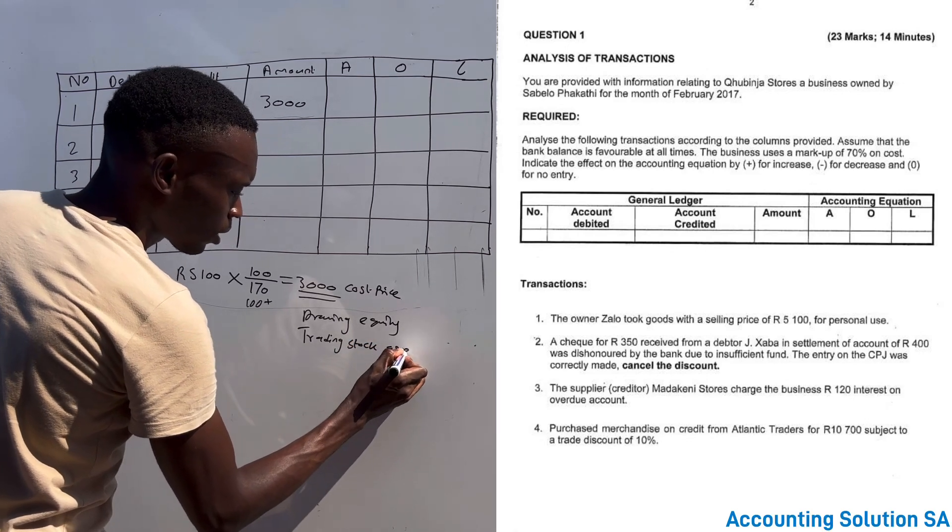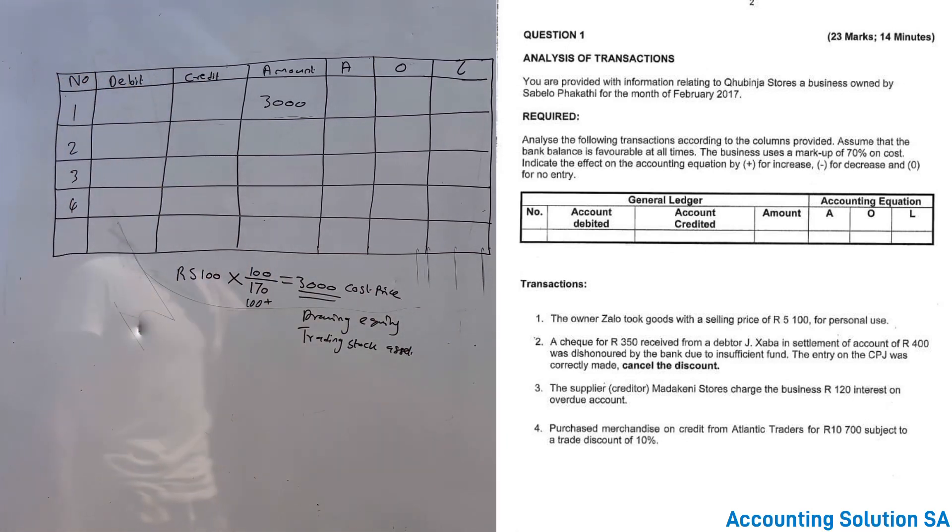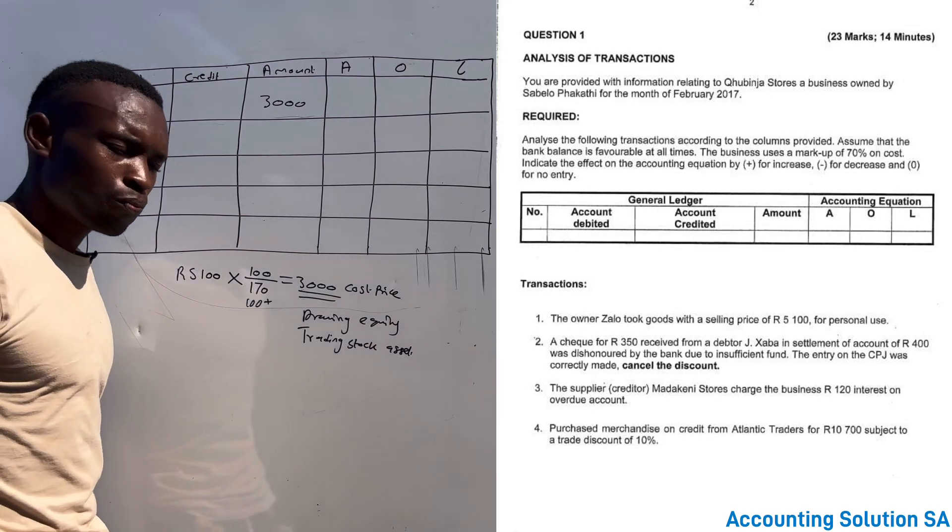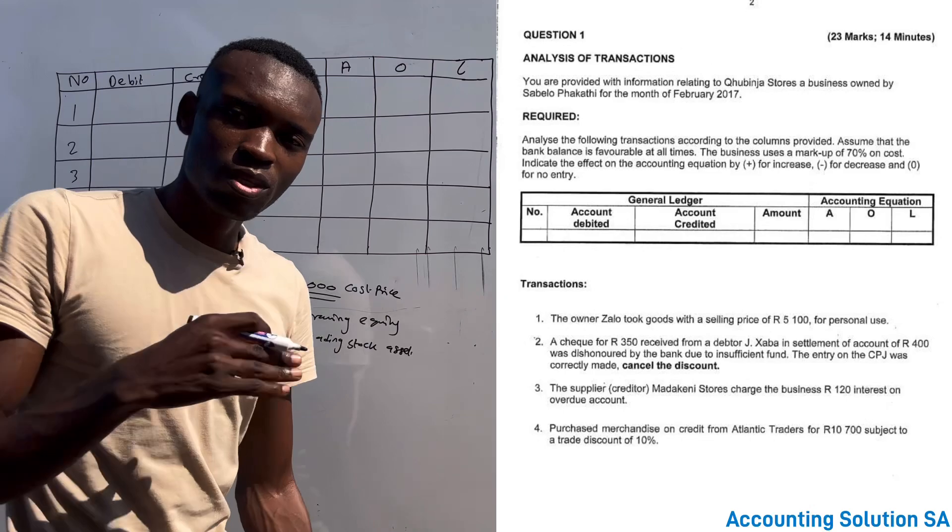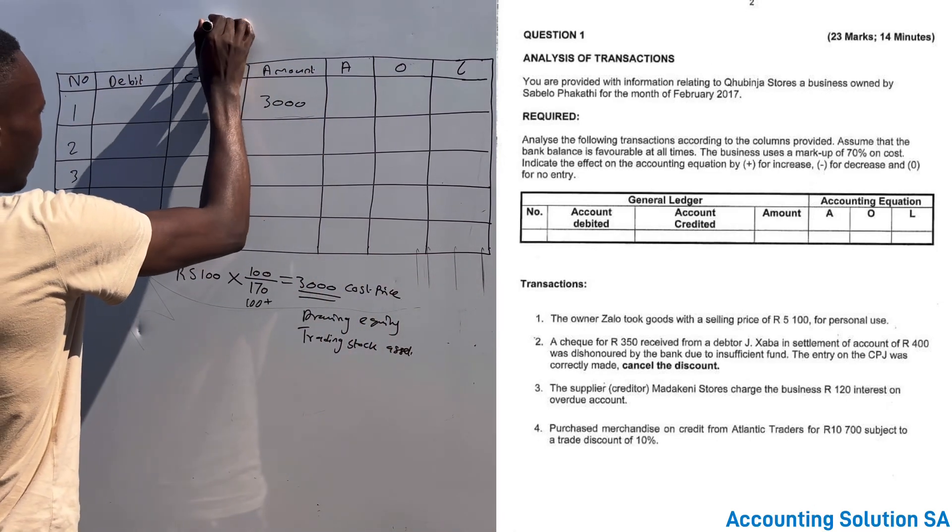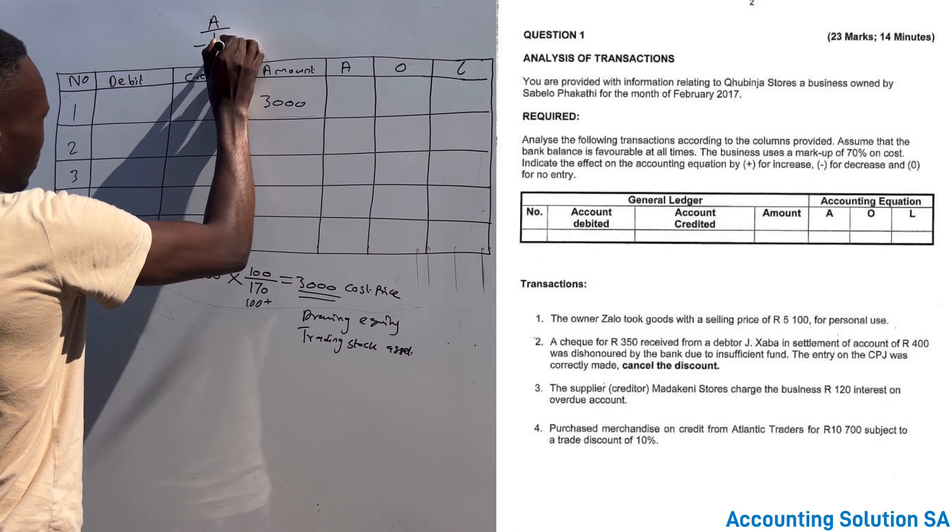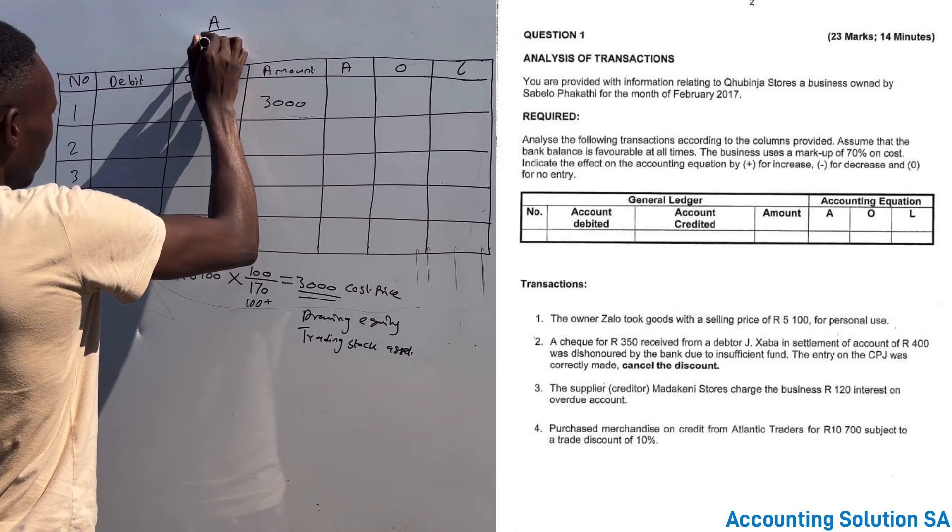Now because the owner took an asset, which means that our assets has decreased. And you know that assets: it's plus minus. Equity: minus plus. Liability: minus plus.